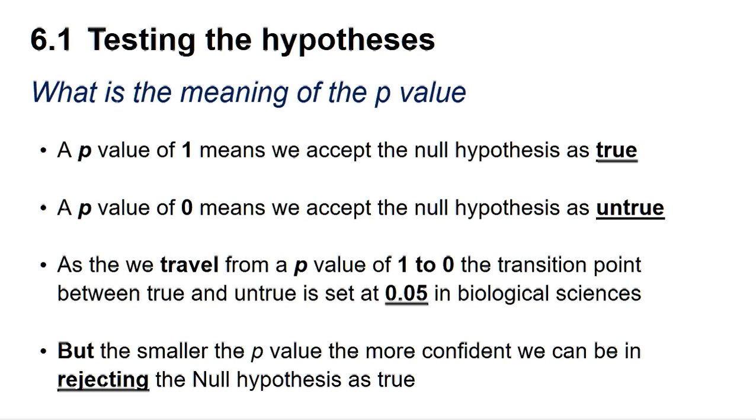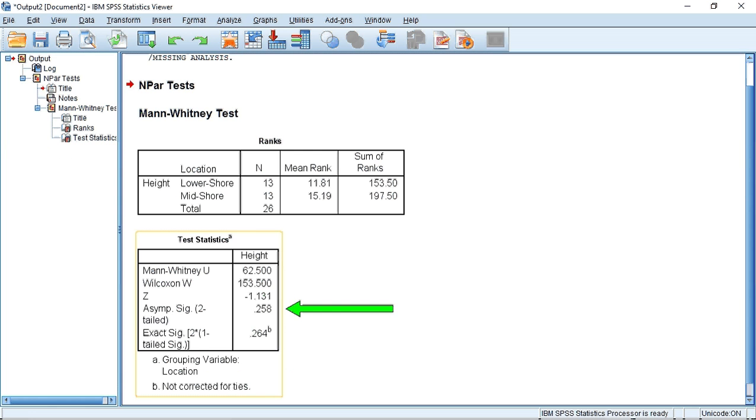The smaller the p-value below 0.05, the more confident we can be in rejecting the null hypothesis. A p-value of 0.258 is larger than 0.05, so we do not reject the null hypothesis. And our conclusion is that there is no difference between the median shell height in millimeters of periwinkles from the mid and lower shores.